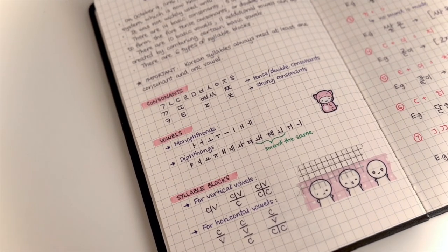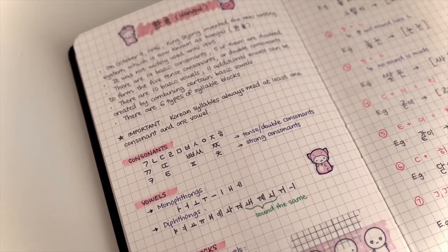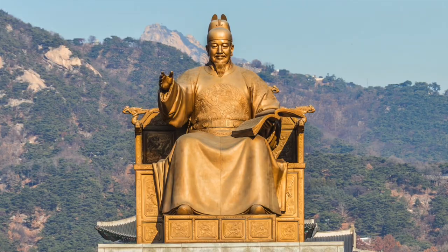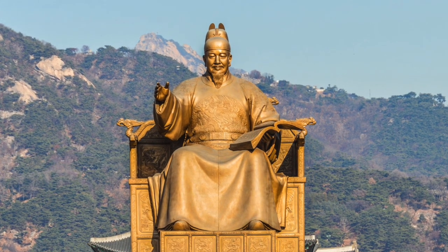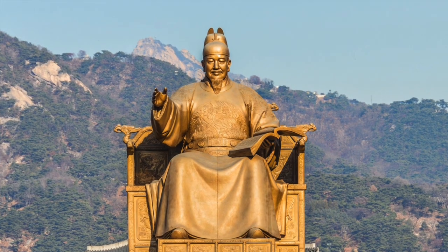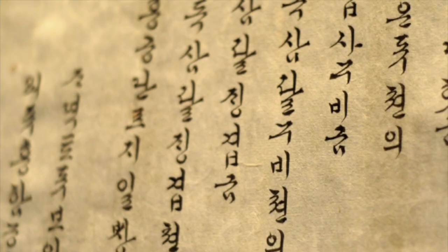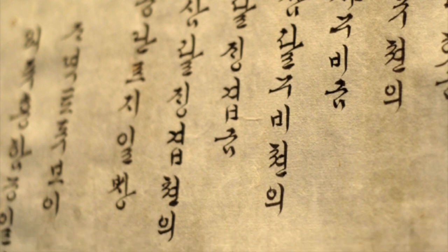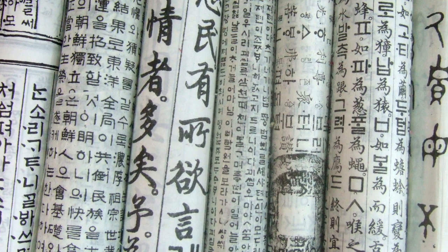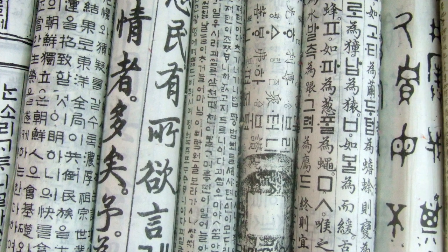As you may know, Hangul is the Korean alphabet, created by King Sejong in 1443. It was designed so people with little education could learn to read and write. Though Hangul became Korea's official writing system in 1446, it wasn't widely used until 1945.